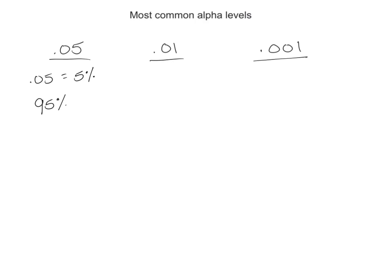So what the researcher is saying is that I am 95% sure these people got better because of the medicine I gave them. There's a 5% chance that maybe it's something else. The alpha level determines also your probability of committing a type 1 error. We're going to get into that a little bit later in the semester.